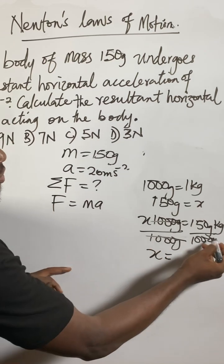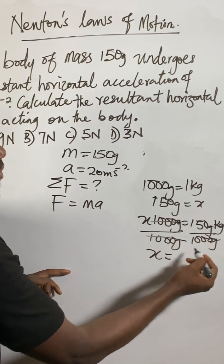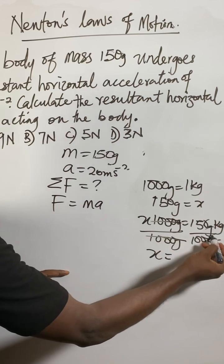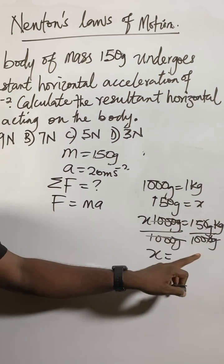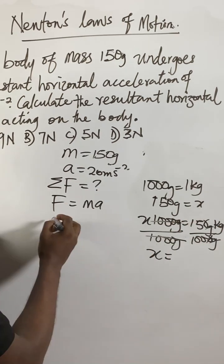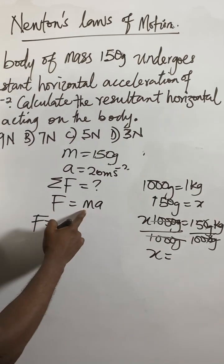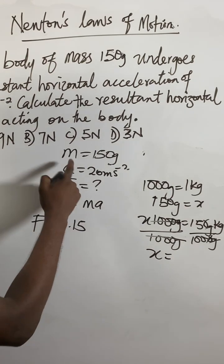1000 gram, this one and this one will cancel. X now will be equal to, you see gram and gram will cancel, 150, the zeros will cancel. 15 divided by 100 will give us 0.15. So here we can get F equal to 0.15 for the mass.